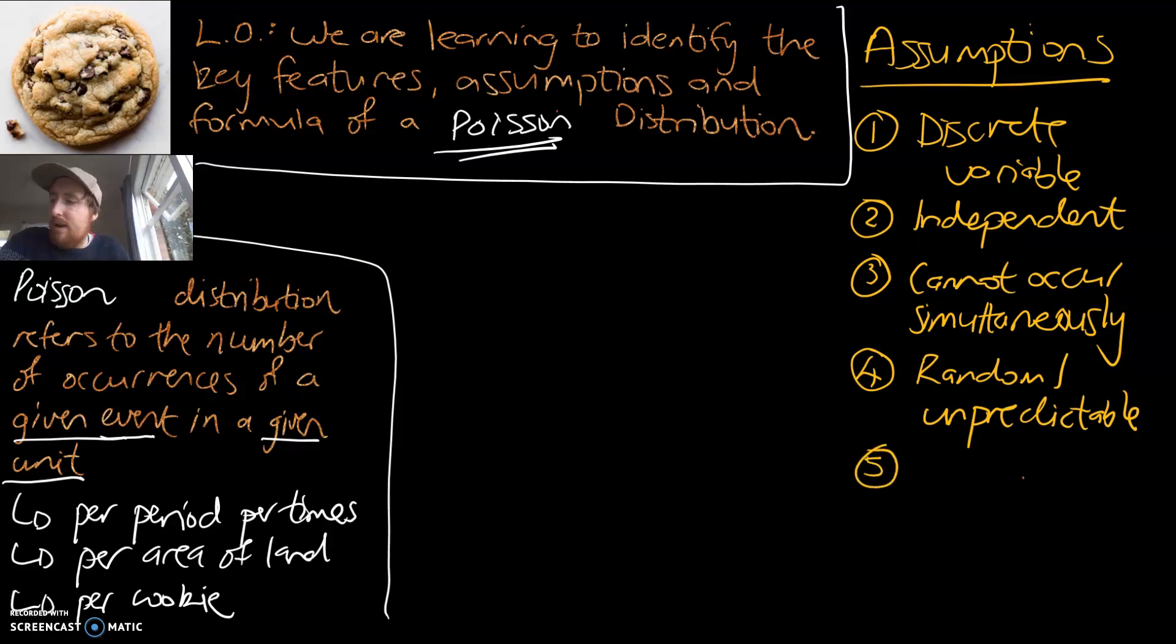There mustn't be a pattern that underlies the occurrence of these events. And the last one, number five, this is the important one: the probability must be proportional to the size of the interval.